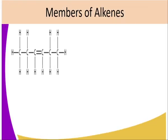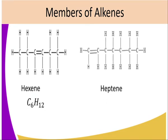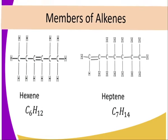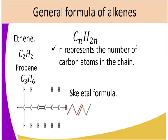More members of Alkenes: we have Hexene having six carbon atoms and Heptene having seven carbon atoms along the chain. The general formula of Alkenes — from the molecular formulas of Ethene, Propene and others — is CnH2n, where n represents the number of carbon atoms within the chain.